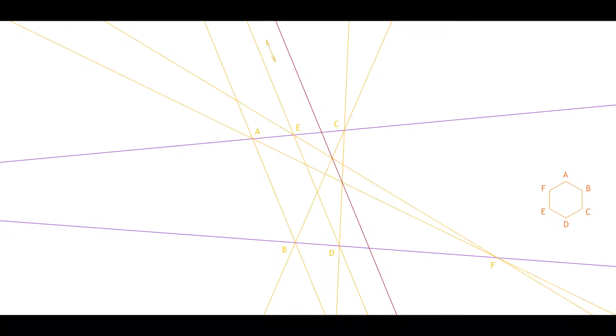The hexagon theorem is valid for parallel lines too, a situation not covered by Pappus' original proof. Feel free to construct some more examples, just to see that it always works.